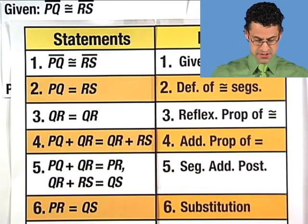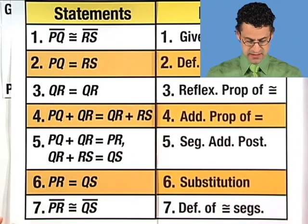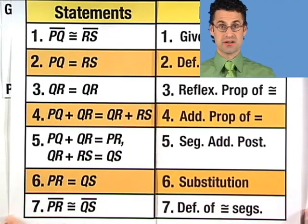And so therefore, if we just substitute, we see that the length of PR is equal to the length of QS. And finally, we see that therefore the segments are congruent by definition. All right.